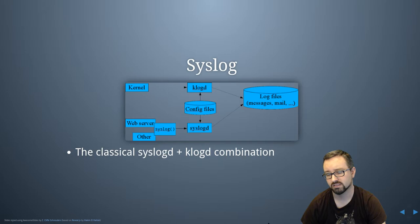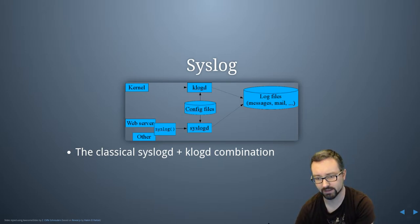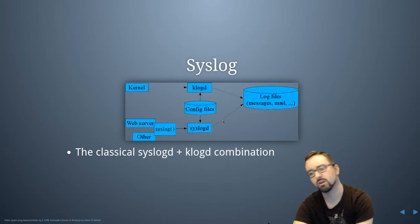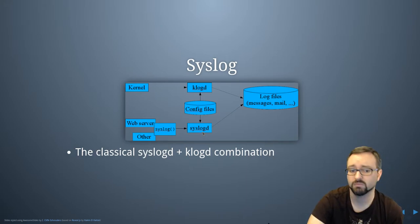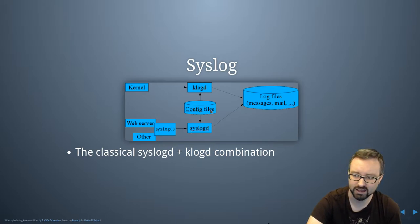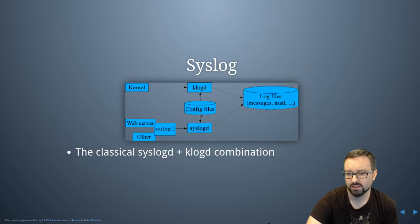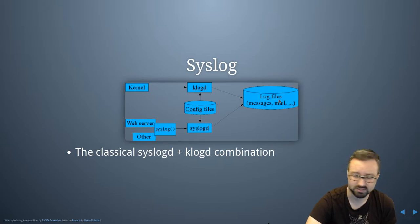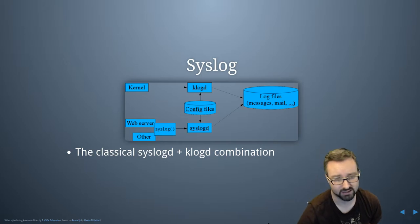The classic syslog combination looks like this: you have the kernel writing messages to klogd, and you've got all of your web servers and other tools using the syslog library call, which sends the log messages to syslogd — a process running on your computer. There are configurations that decide where to store things, and you can set priorities, severities, and facilities. Based on how it's configured, it will log into different places — log files — or it can even send messages based on those incoming events.